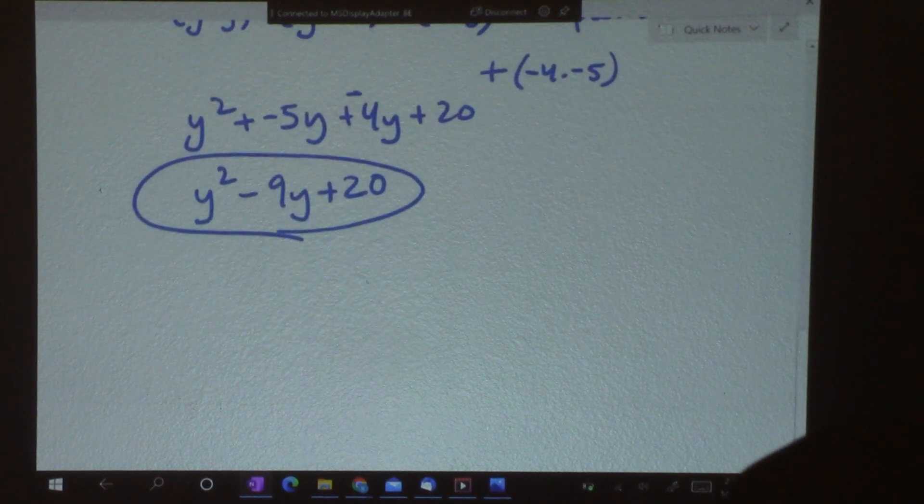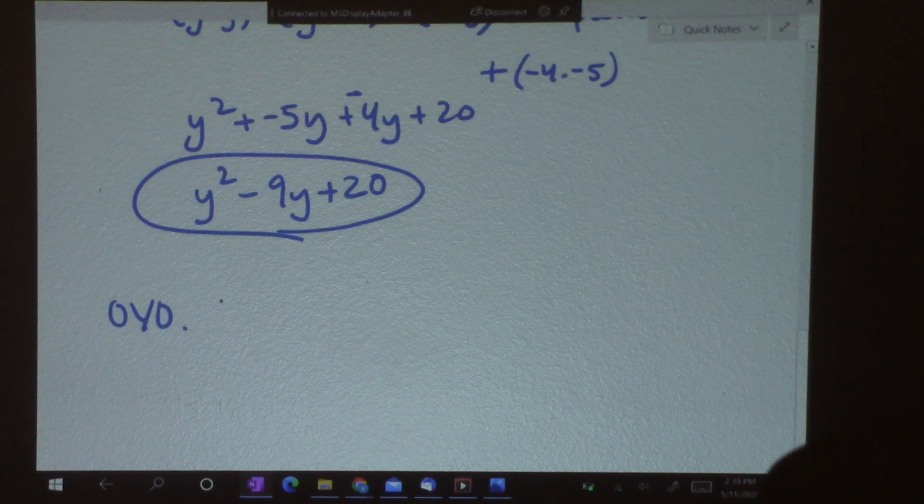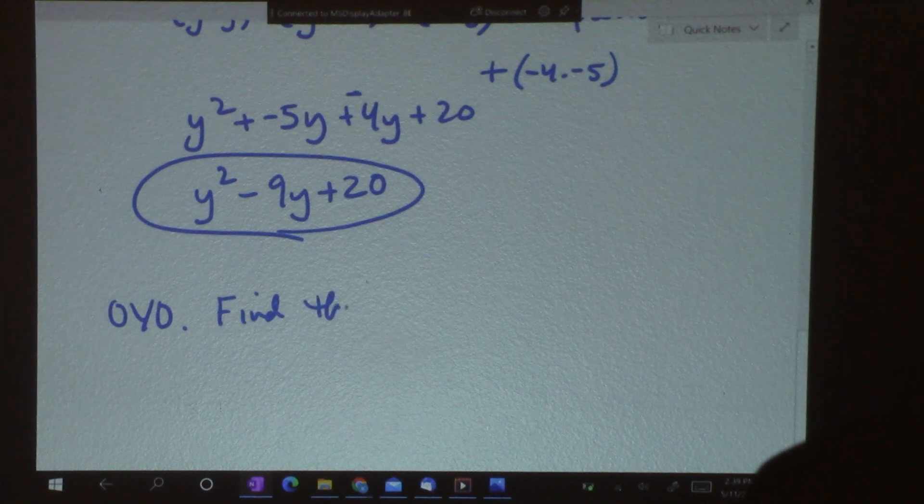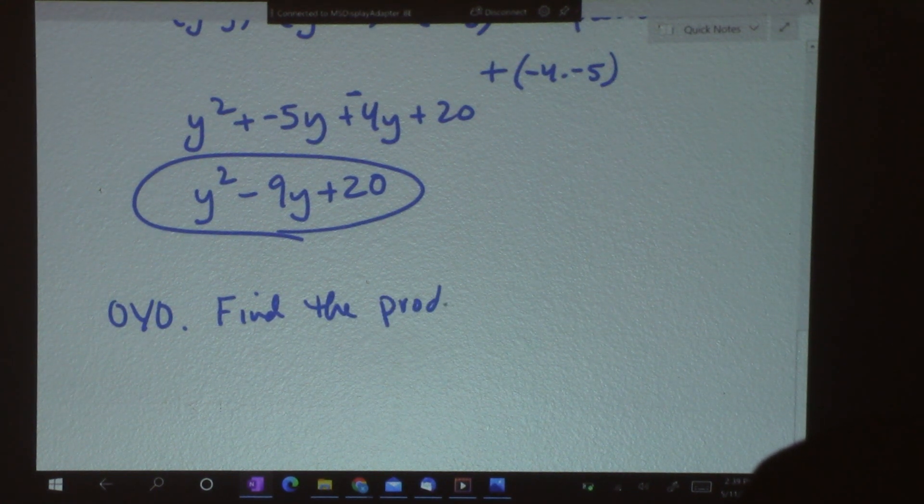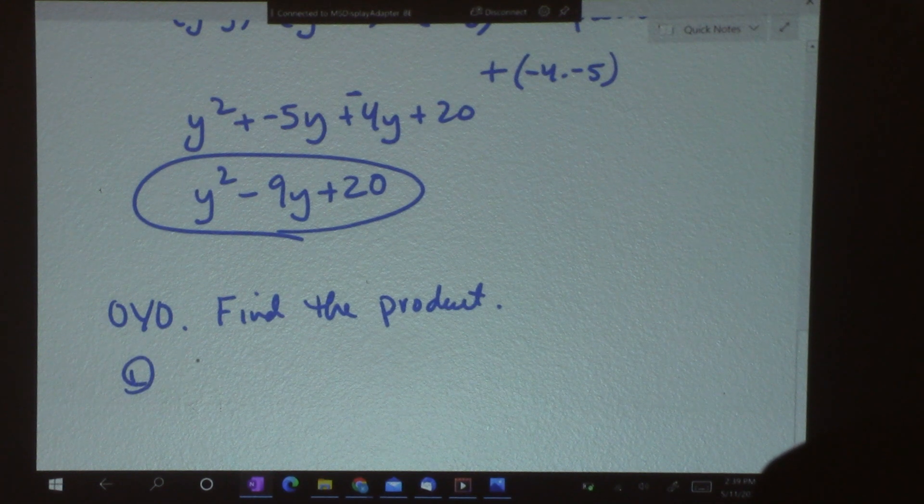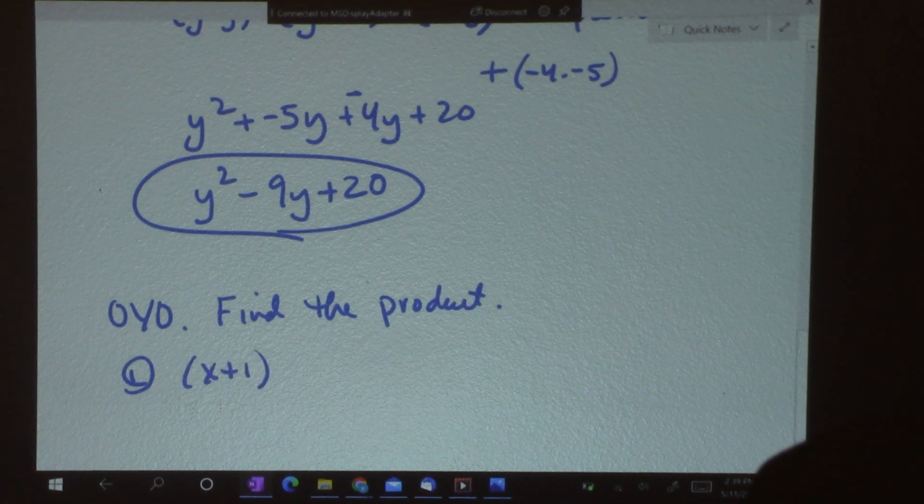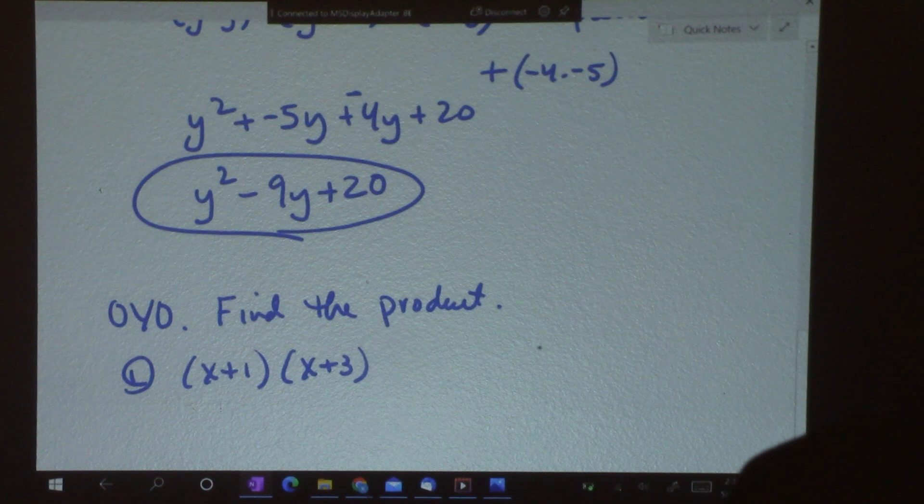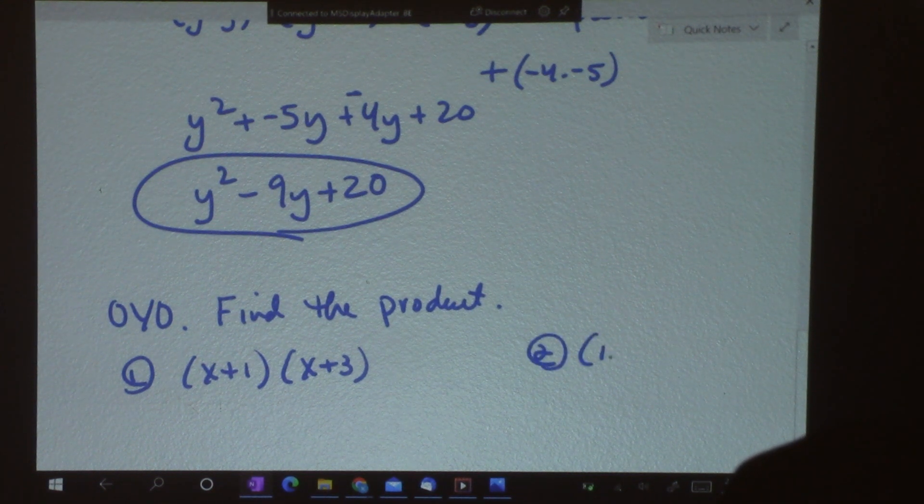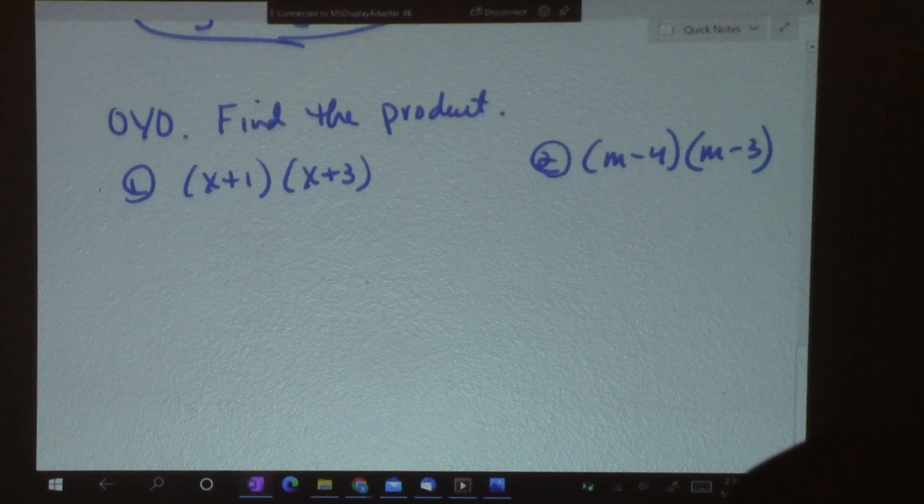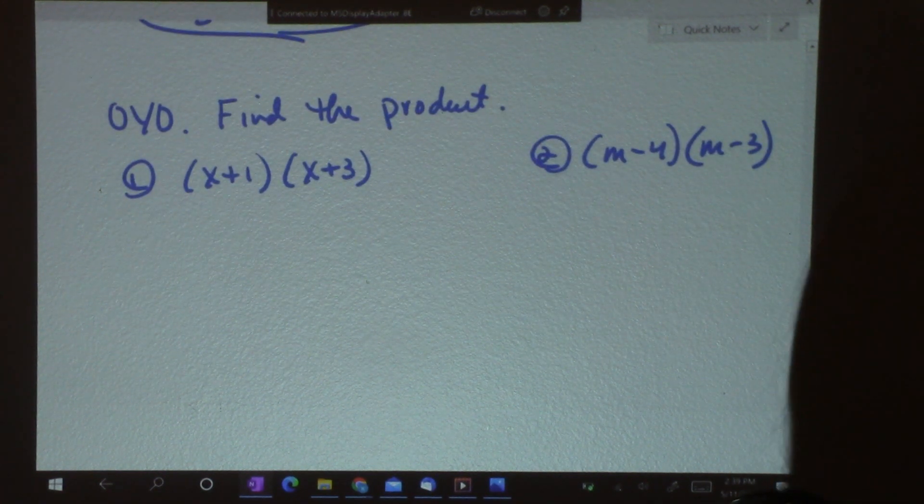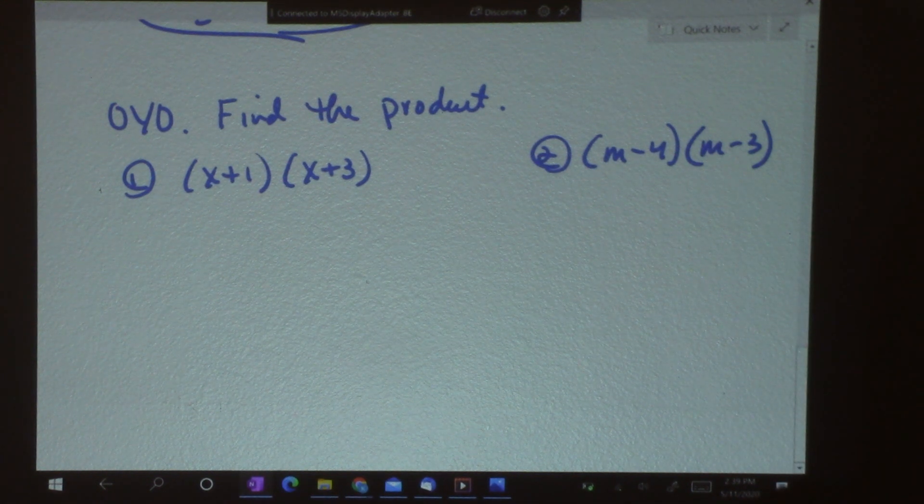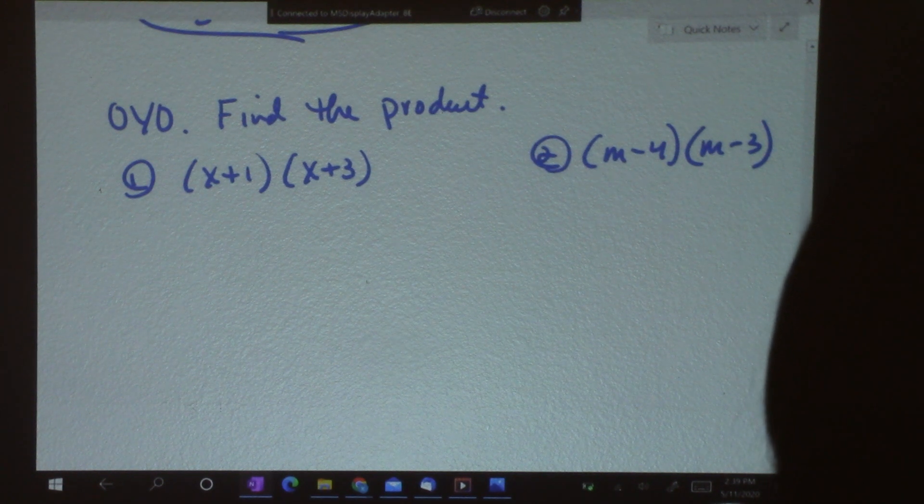I'm going to give you a couple of OYOs. Find the product. So, here's number 1. x plus 1 times x plus 3. And number 2 is m minus 4 times m minus 3. Why don't you go ahead and pause the video and try those first two. And then we'll come back in just a minute and go over those.